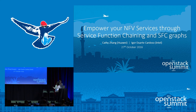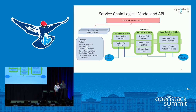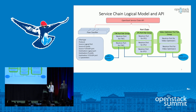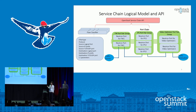Today our topic is about how you can empower your NFV services through the OpenStack Service Function Chaining and the Service Function Chain graph. First I'm going to go through the service chain logical model and API of existing OpenStack Service Function Chain. The OpenStack SFC API is composed of two parts: a flow classifier and a port chain. The flow classifier specifies the classification rules used to classify the flow going through the service chain. The port chain consists of an ordered sequence of service functions — in this example, a firewall, an IPS, and a video optimizer.